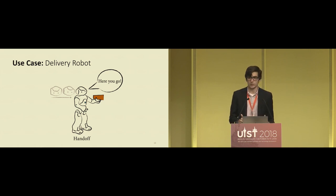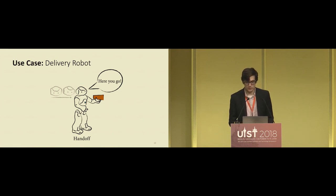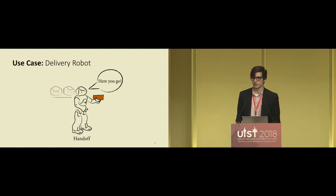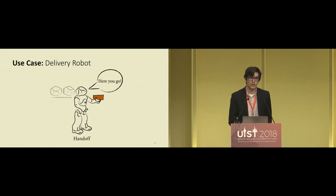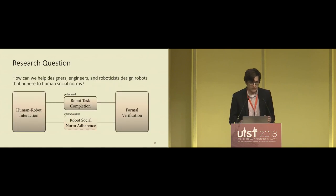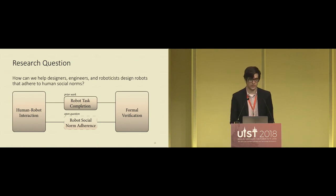Suppose the robot also says something like 'here you go' while handing off the package. Then the robot also needs to use its gaze to regulate the speaking floor, and we need to make sure it does not violate conversational turn-taking norms — we don't want it to interrupt the human. So the research question is: how can we enable designers, engineers, and roboticists to design robots that adhere to human social norms?